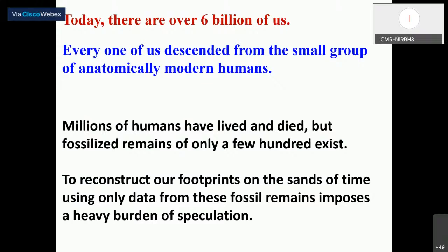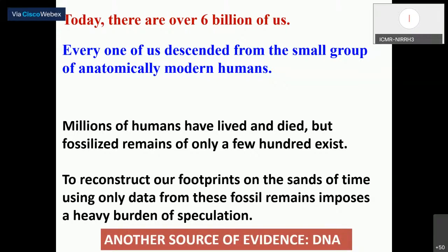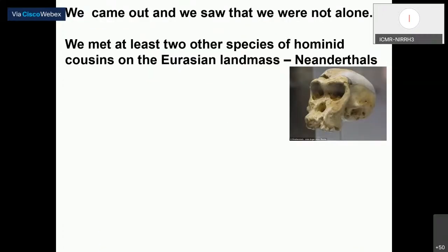Millions of us have lived and died, but fossilized remains of only a few hundred exist. To recreate the story of human evolution based on fossilized remains imposes a great burden of speculation, primarily because of the small numbers. Is there any other way to reconstruct our evolutionary past? Yes, there is — today we use genetic data in order to recreate our evolutionary past. So another source of evidence is DNA, not just fossils, and DNA is in plenty.